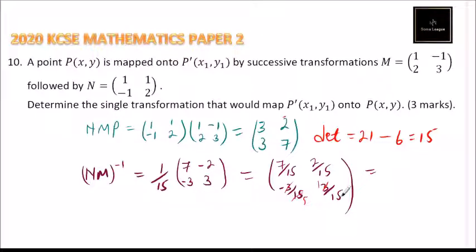So the matrix will be (7/15, 2/15; -1/5, 1/5). So that is the matrix that transforms, if you multiply the coordinates which are given, it takes back P' onto P, and that way you will be able to get 3 marks. So that's how you solve that question.